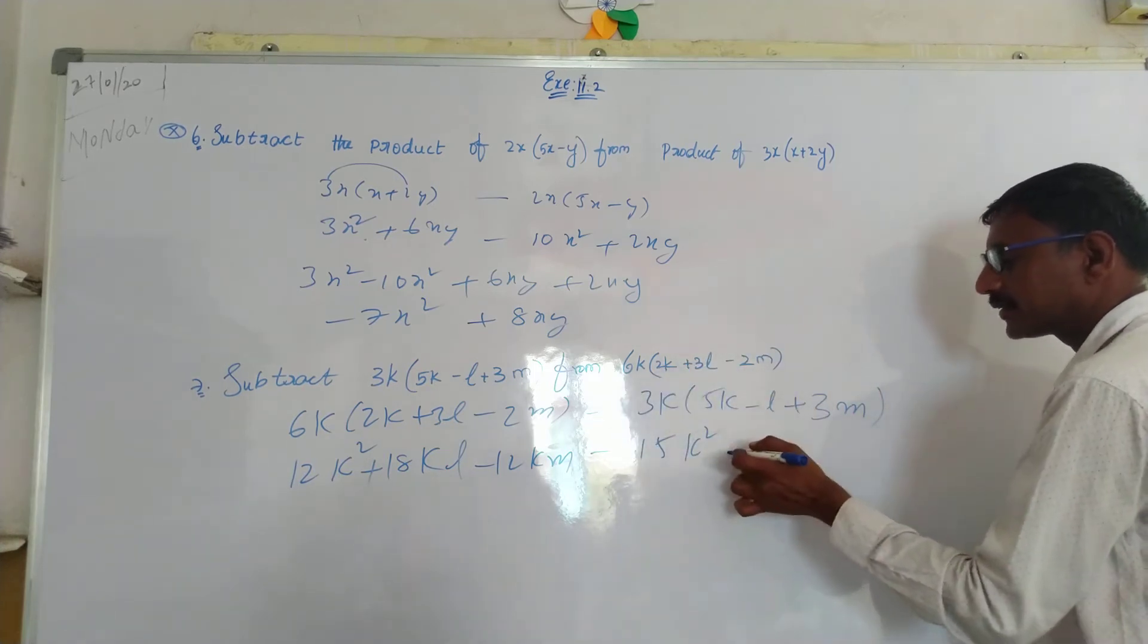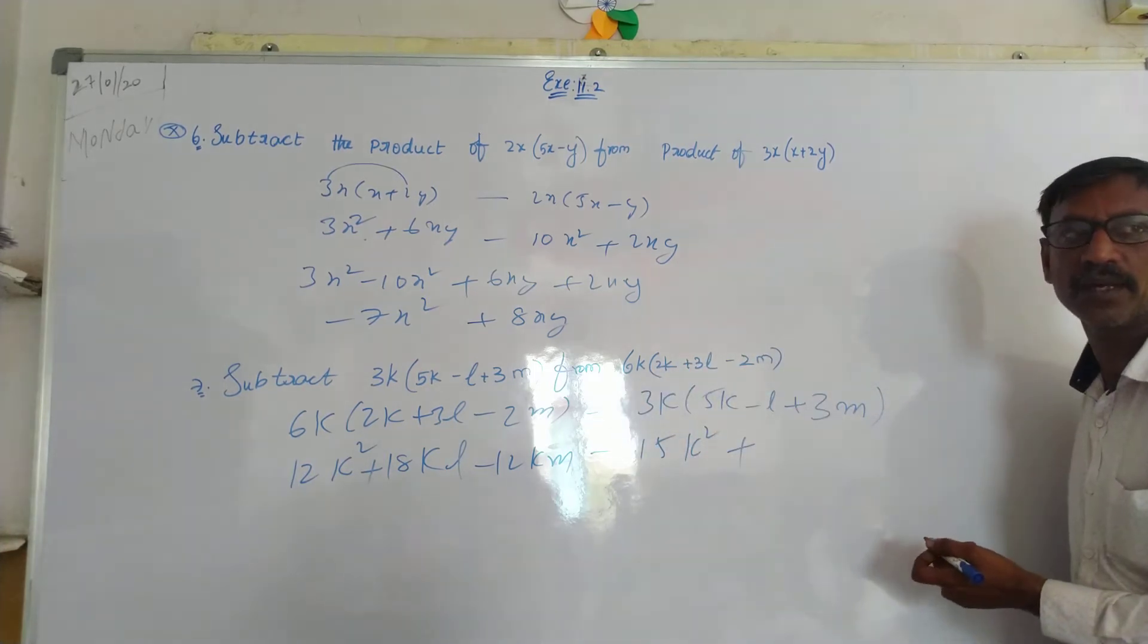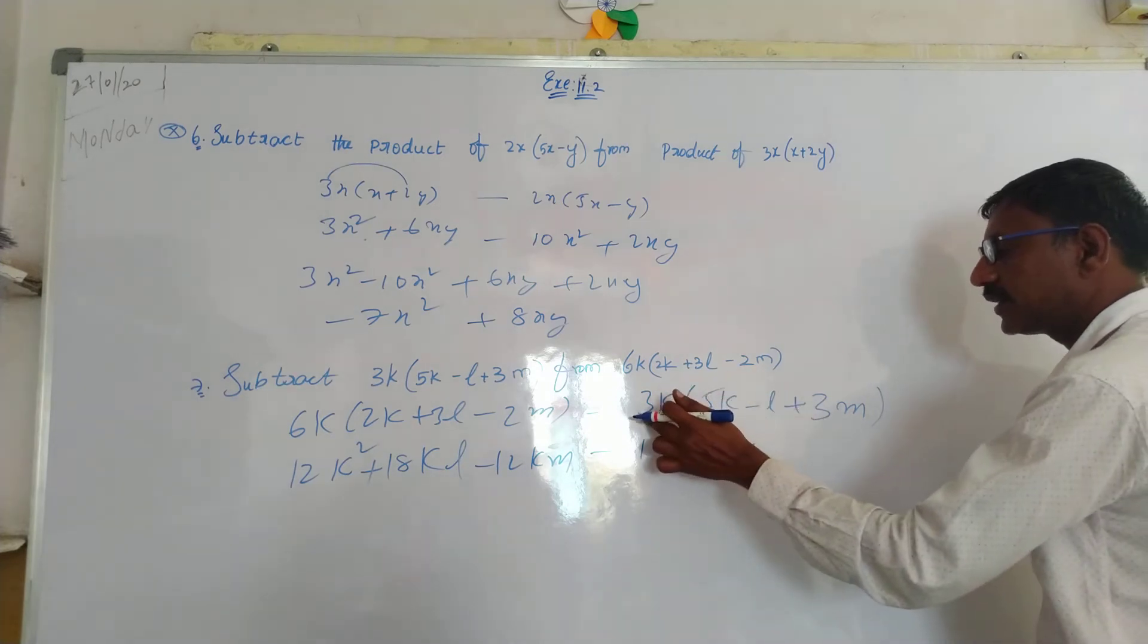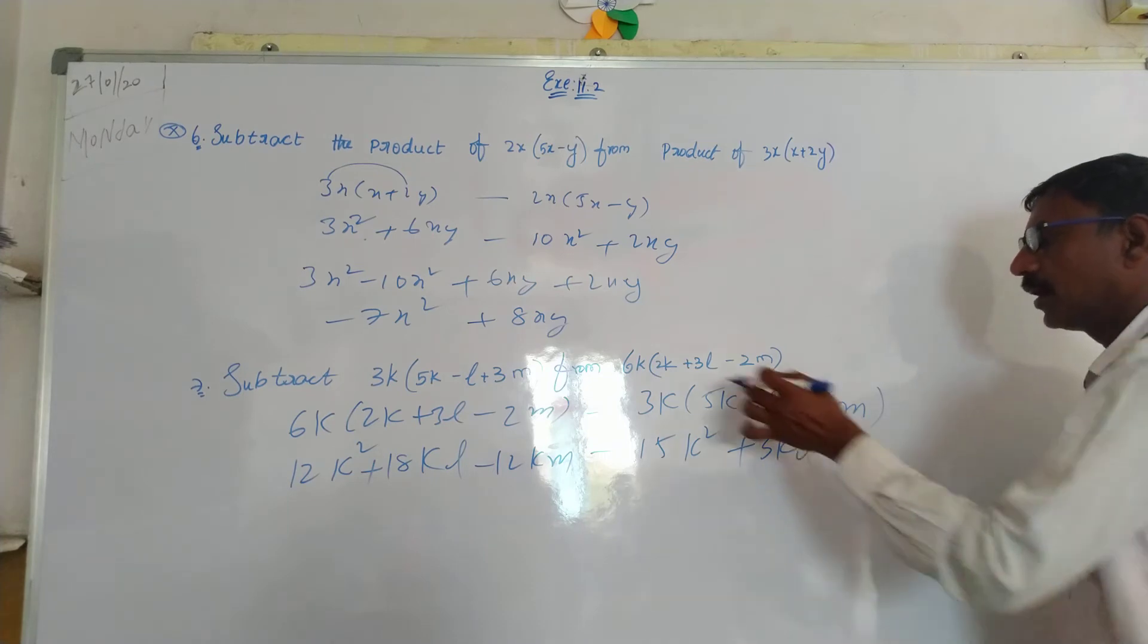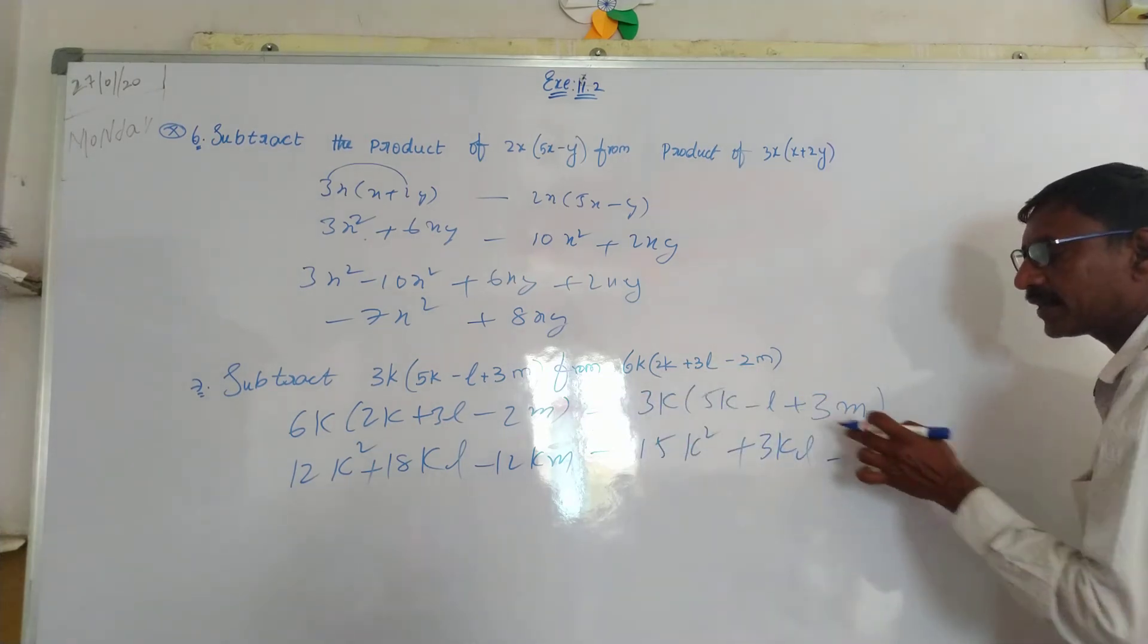Minus into minus, symbol change over. Then symbol is, 3K into L is 3KL. Plus into minus is minus. Plus M.